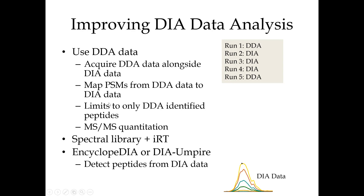This approach limits us to only the things identified in our DDA. People are frequently doing high fractionation, building huge libraries to say 'this is everything I could possibly see, let me query all of it in my DIA.' In the future, we'll also do spectral library plus IRT, which gives a more flexible view of retention time. Or we can use tools that go right from the DIA data without any DDA data.